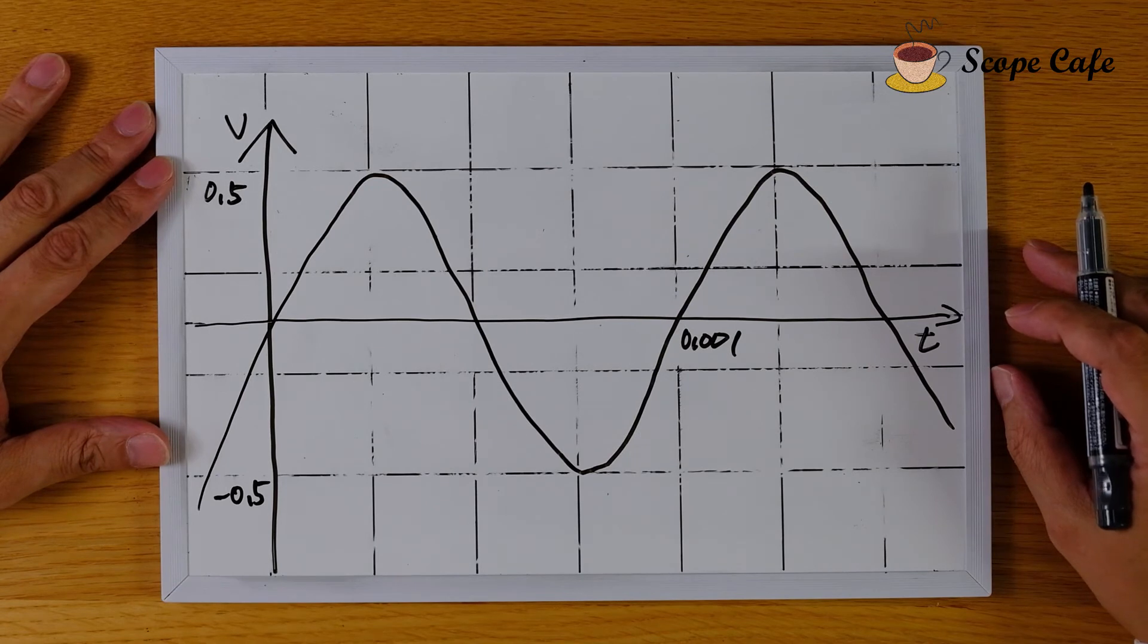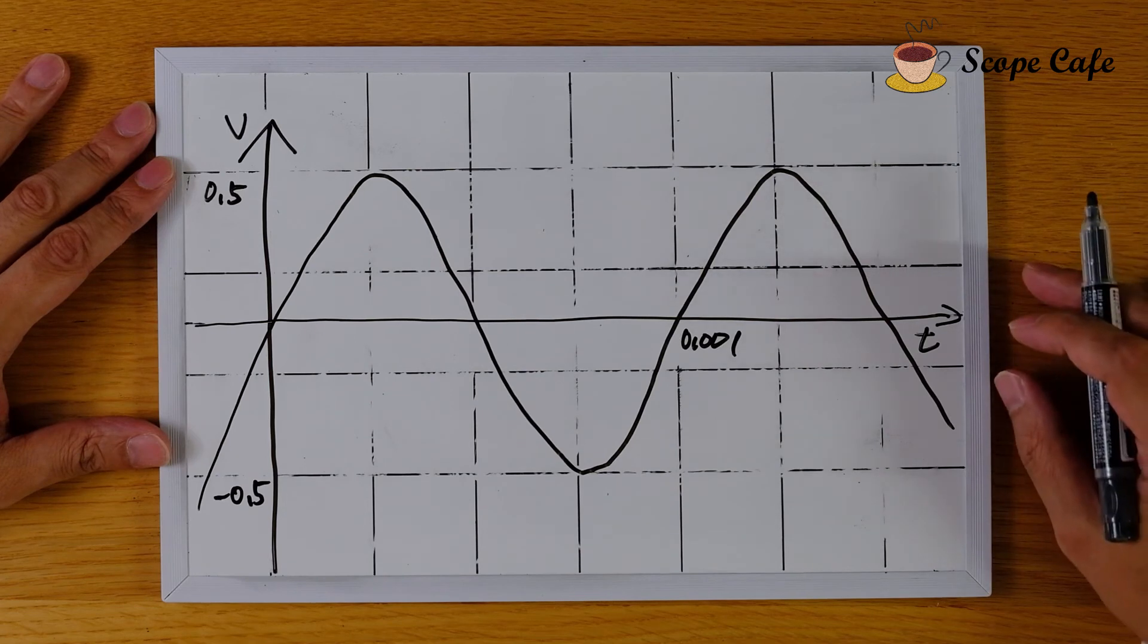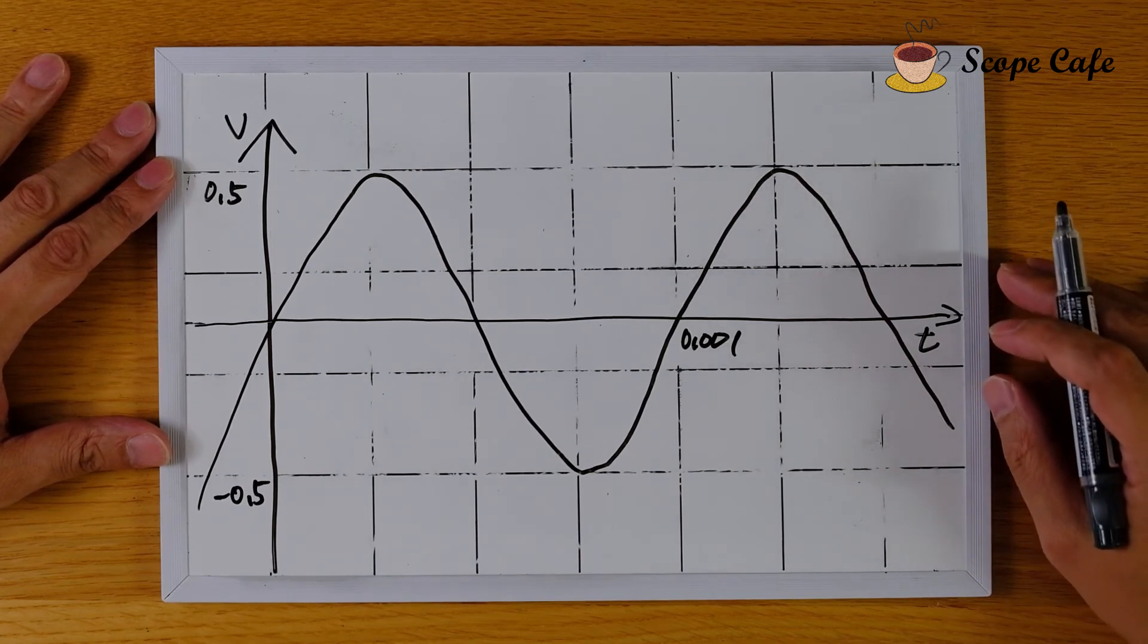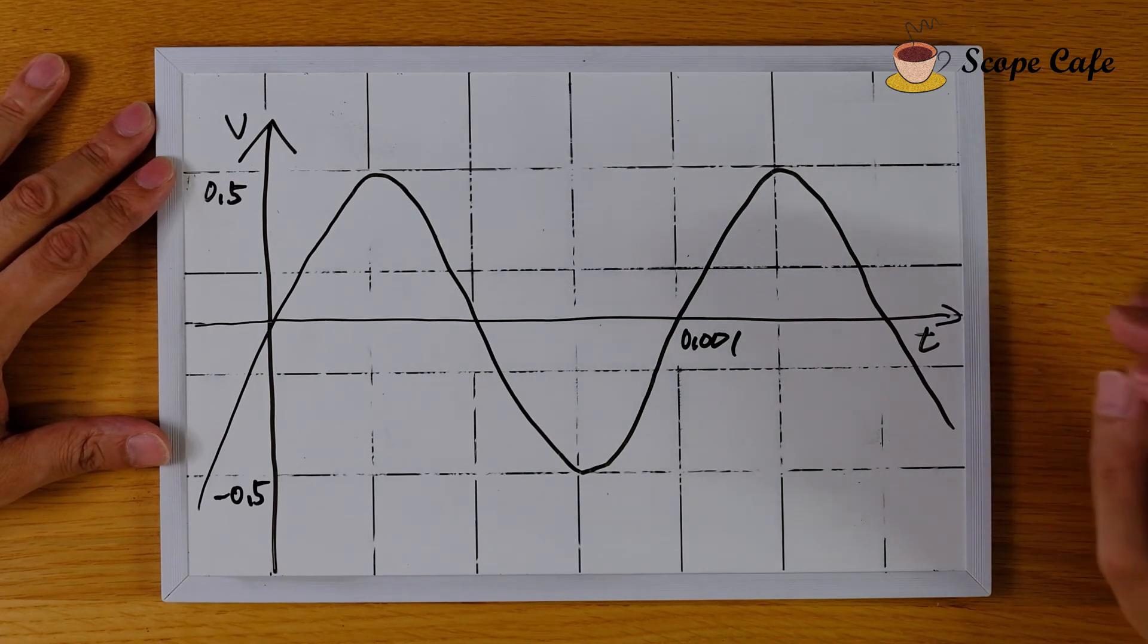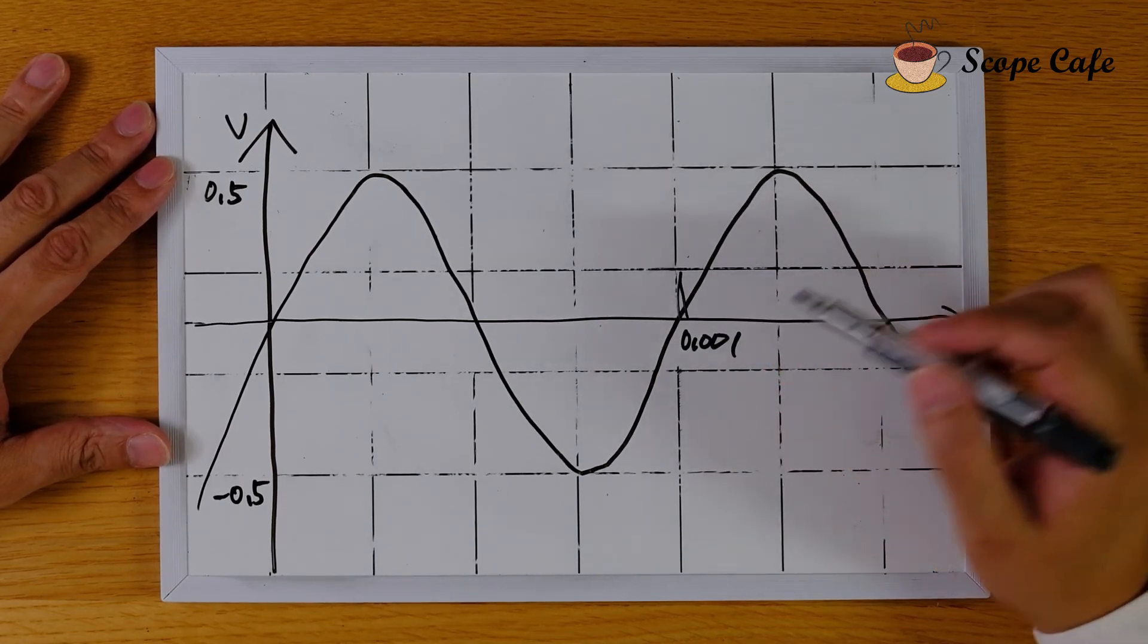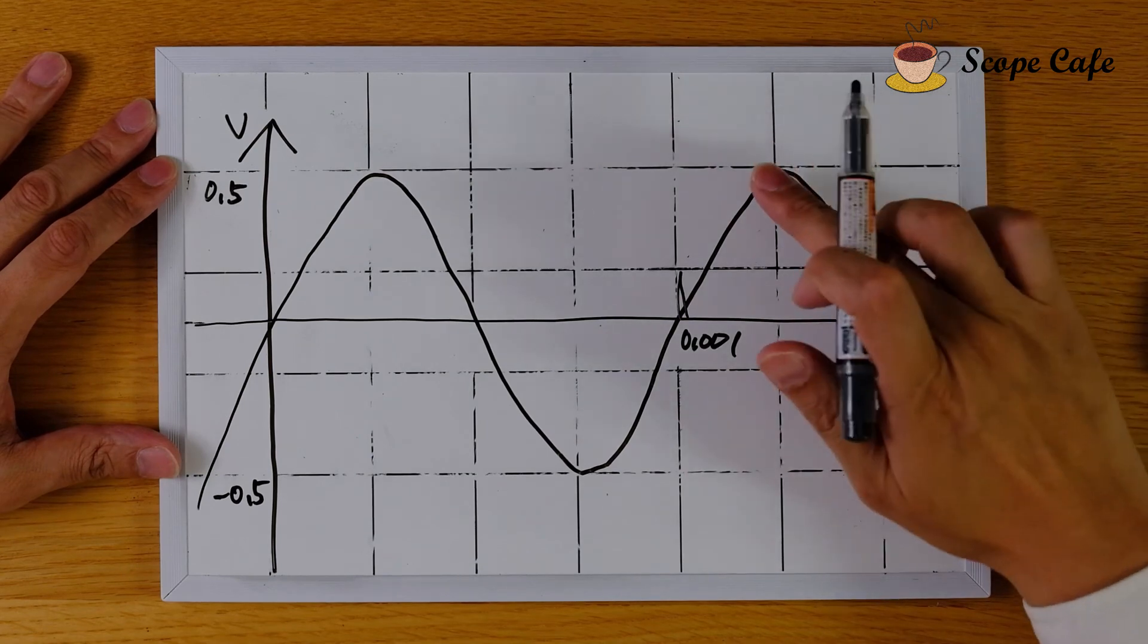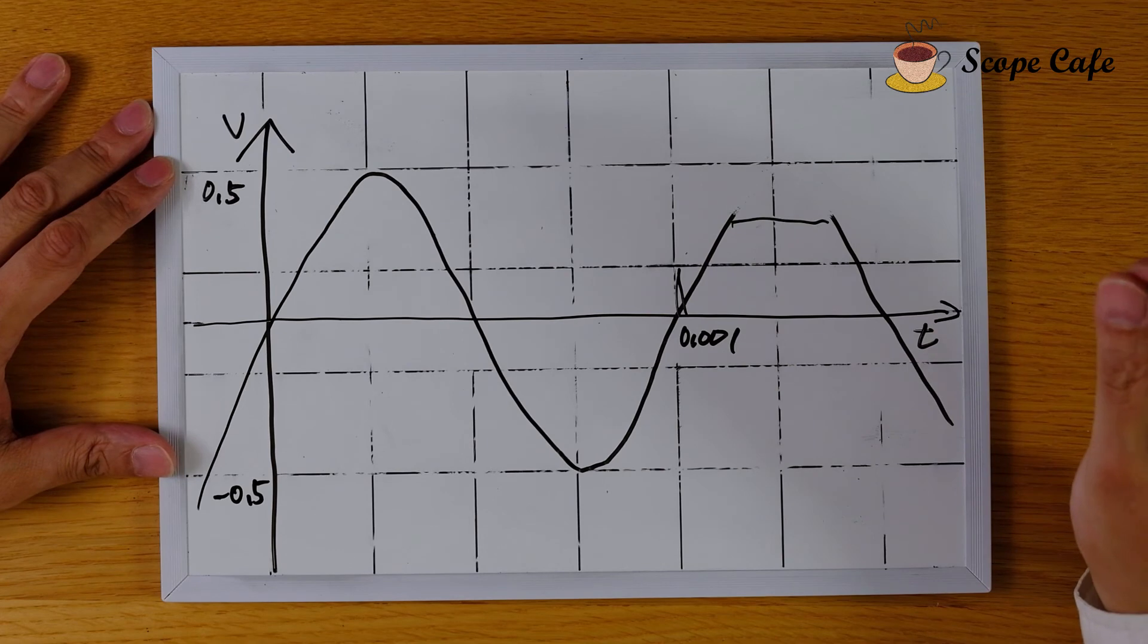Okay, so if the waveform is very simple, like today's sine wave, it's not such a large problem. But in reality, waveforms are not so simple. Especially, you're using an oscilloscope when you're finding some faults, like noise or when a waveform is saturated here.